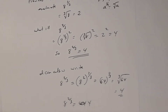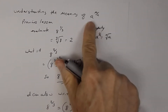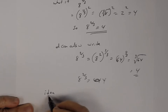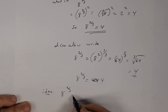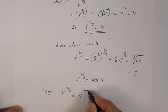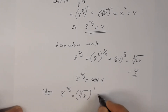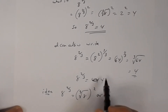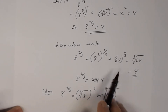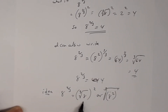Now I want to come up with a rule. Remember: 8 to the 2/3 can be written as the cube root of 8, squared — or the cube root of 8 squared. The denominator is your index. Even though the numerator may not be 1, the denominator is still your index. In both cases, the 3 is your index — cube root — and the numerator 2 is your exponent.